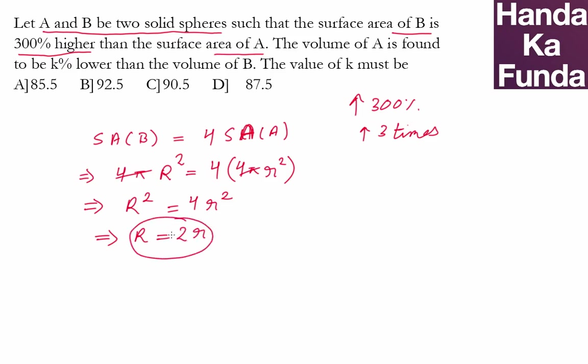So this means the radius of the big sphere is twice the radius of the small sphere. Now, with this relationship, we can find the ratio of the volumes.